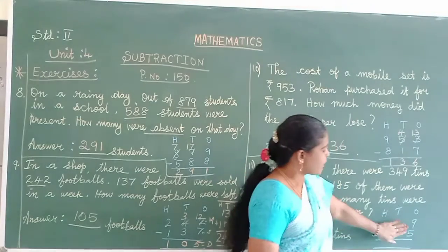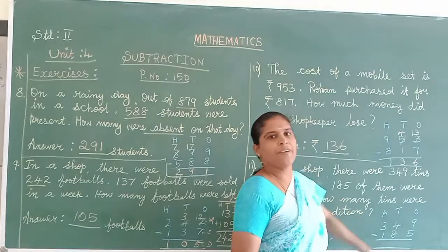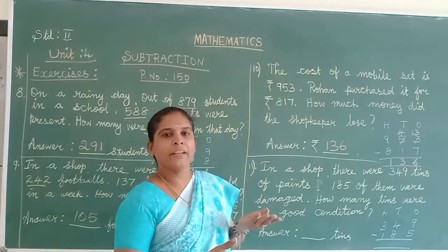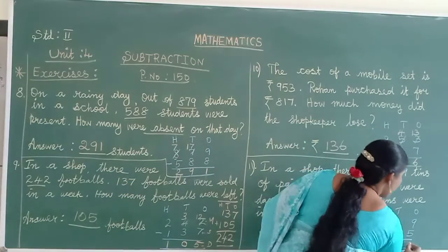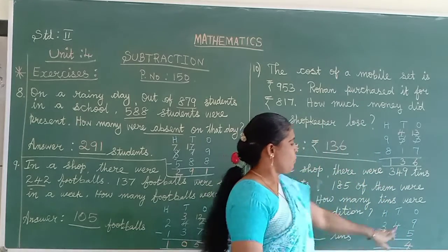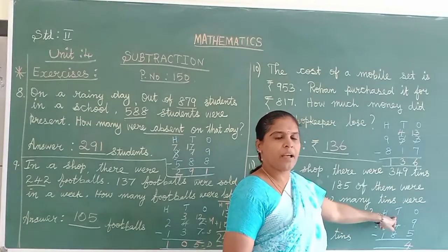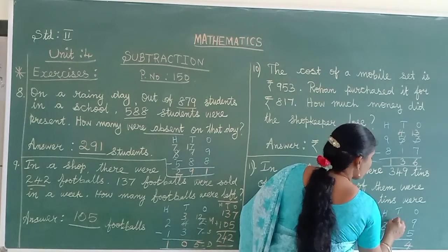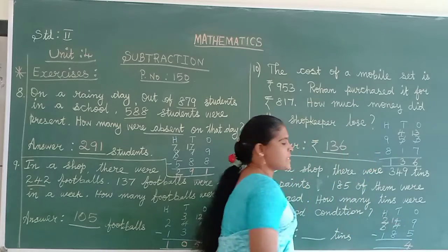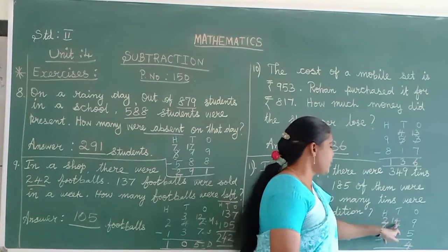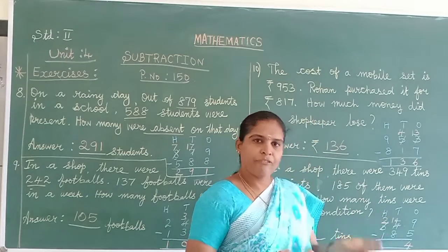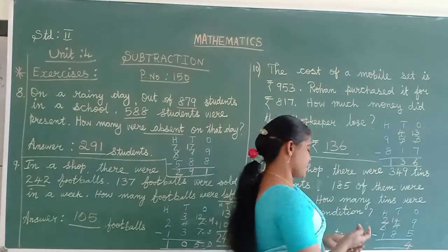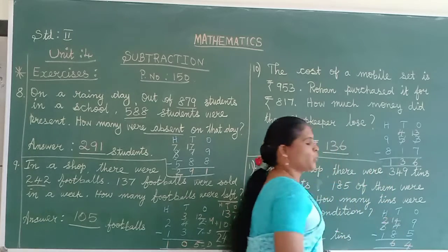Come to ones column: 9 and 5. Bigger number on top, so no problem. Directly you can do the subtraction. 9 minus 5. 9 in the mind, 5 on your finger. Before 9: 8, 7, 6, 5, 4. And in the tens column, 4 and 8, smaller number on top. So what do you do? Yes, do the borrowing. Very good. 14 minus 8. Now what can we do? 14 in the mind, 8 on your finger. Before 14: 13, 12, 11, 10, 9, 8, 7, 6. Then 2 minus 1 equals 1.